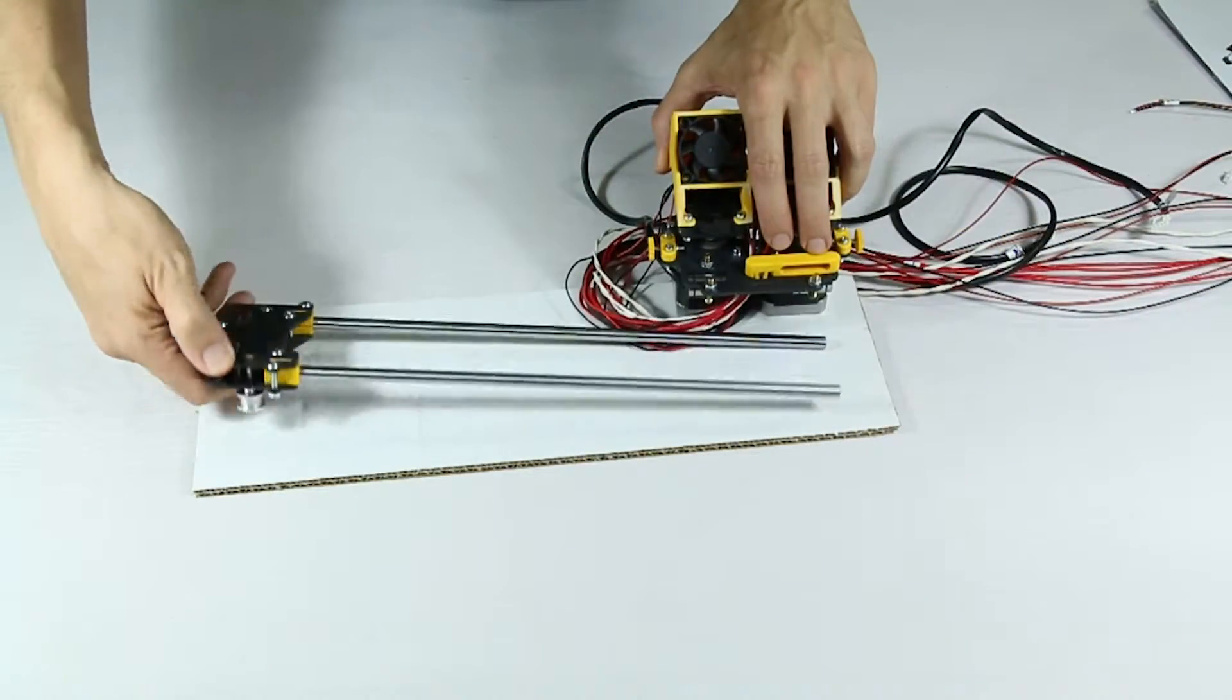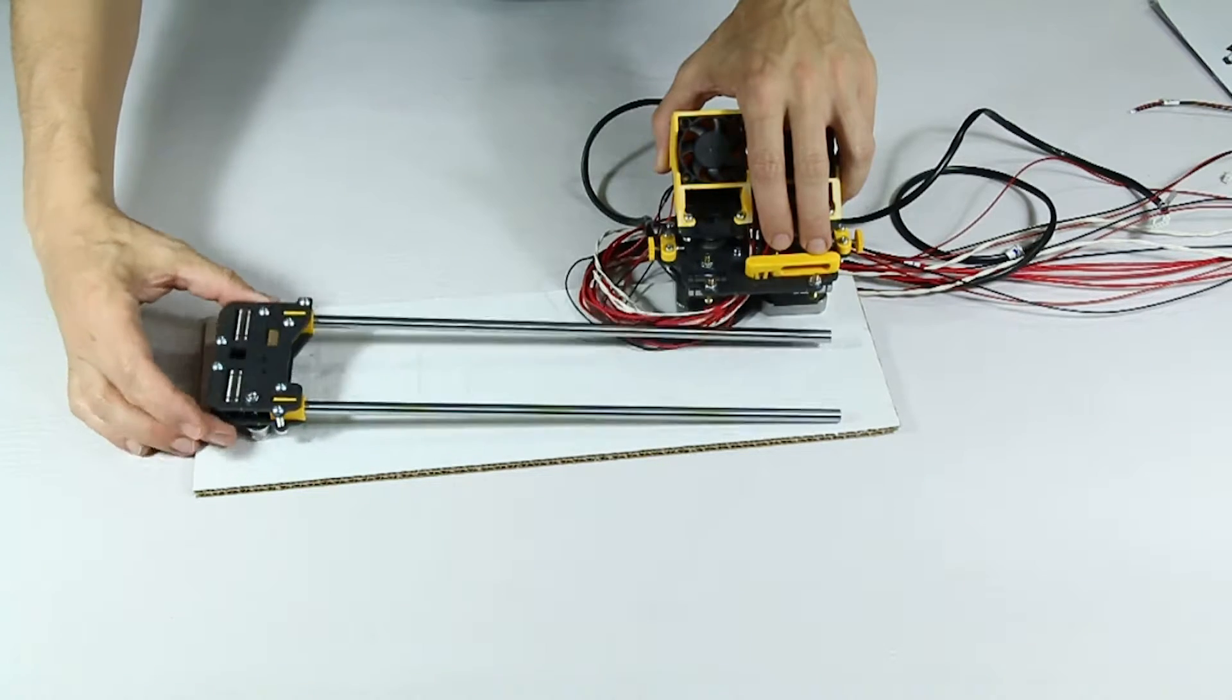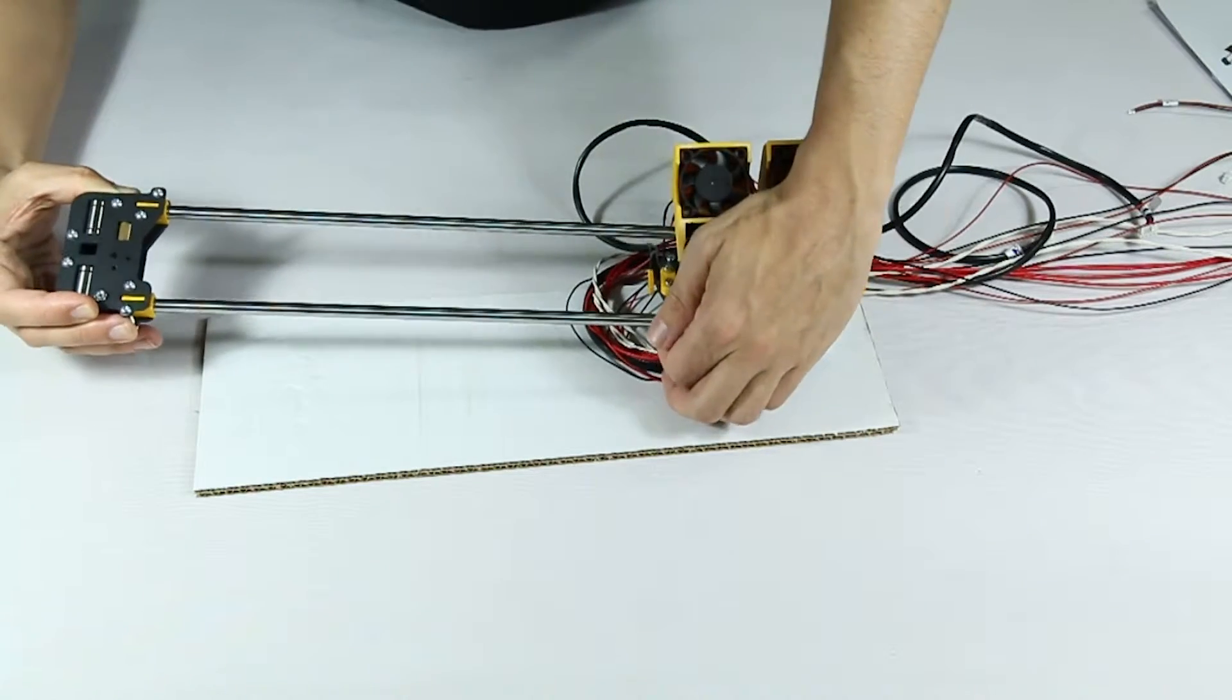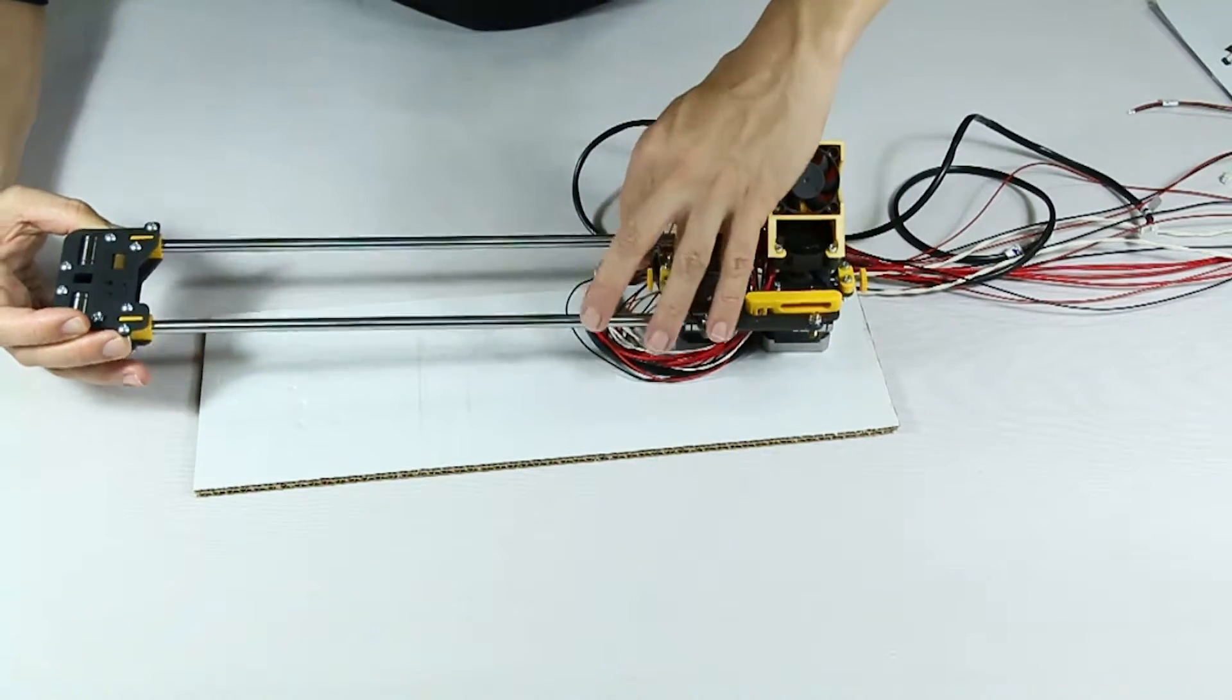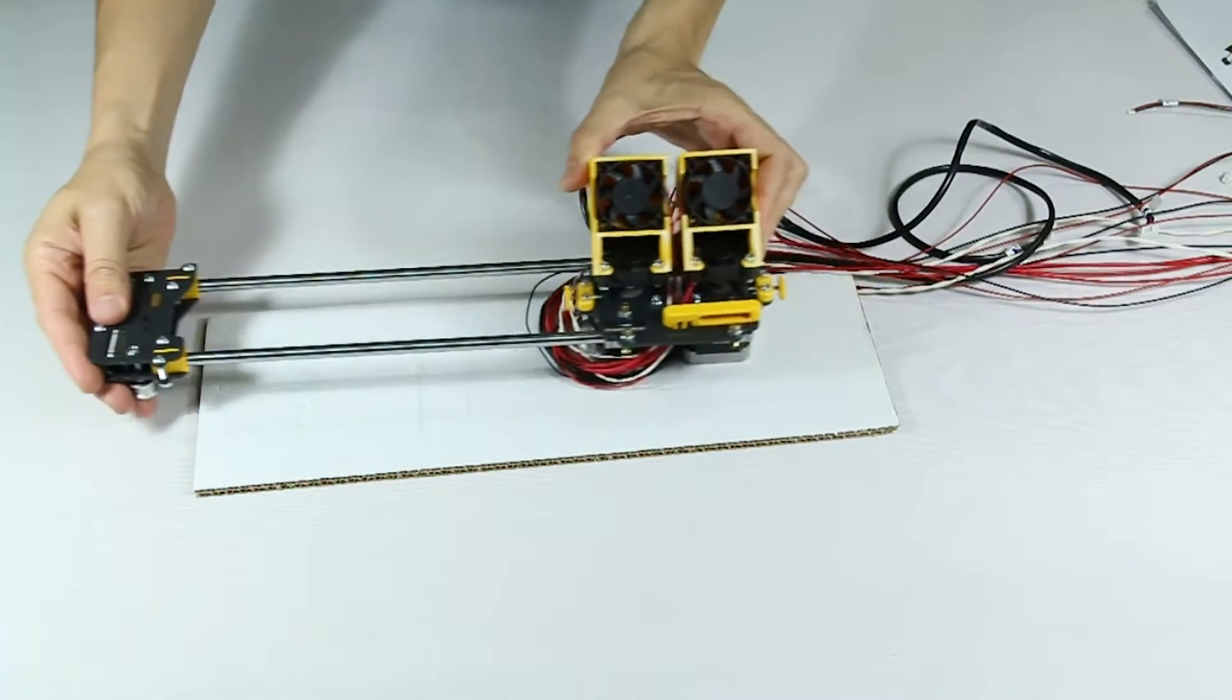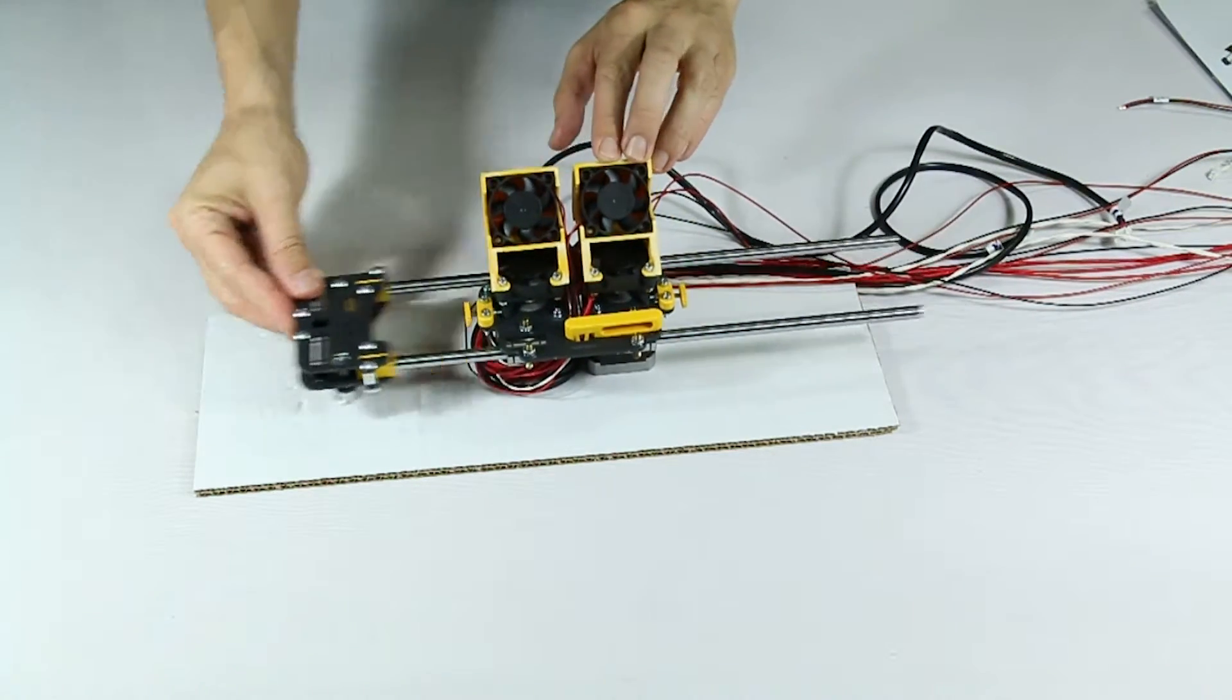The next step is to slide the pre-assembled extruder unit onto the guides. Pay attention to the manual because all components must face a particular direction. Slide the guides into the linear bearings on the extruder unit. Move the guides back and forth to check they are sliding freely.